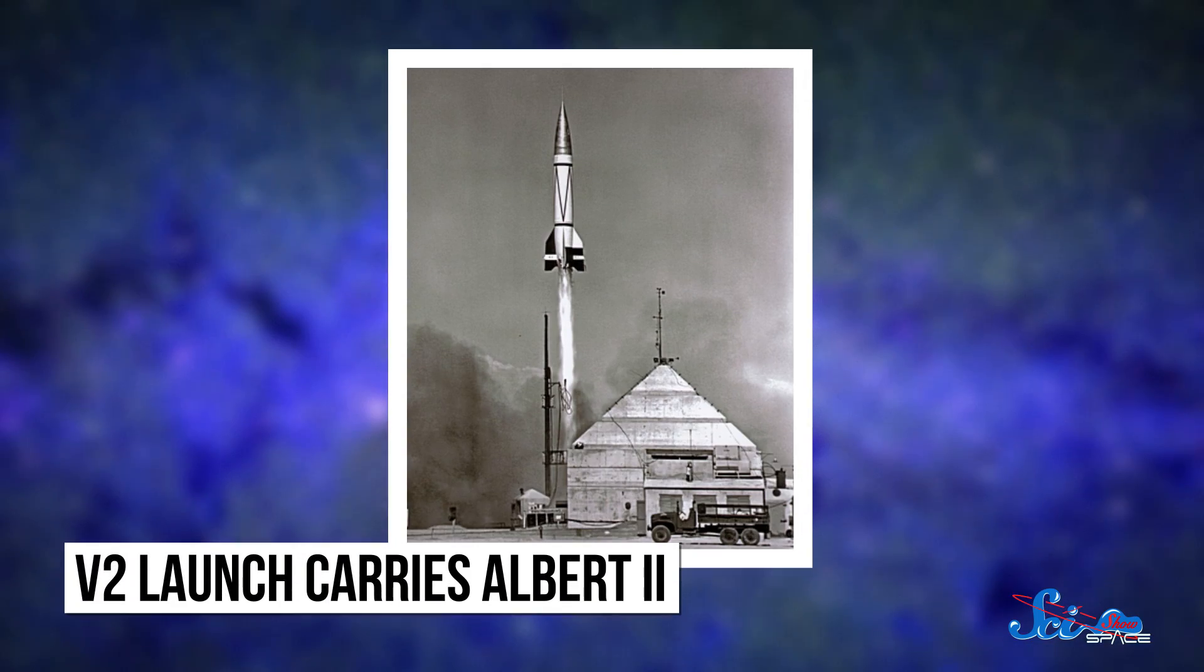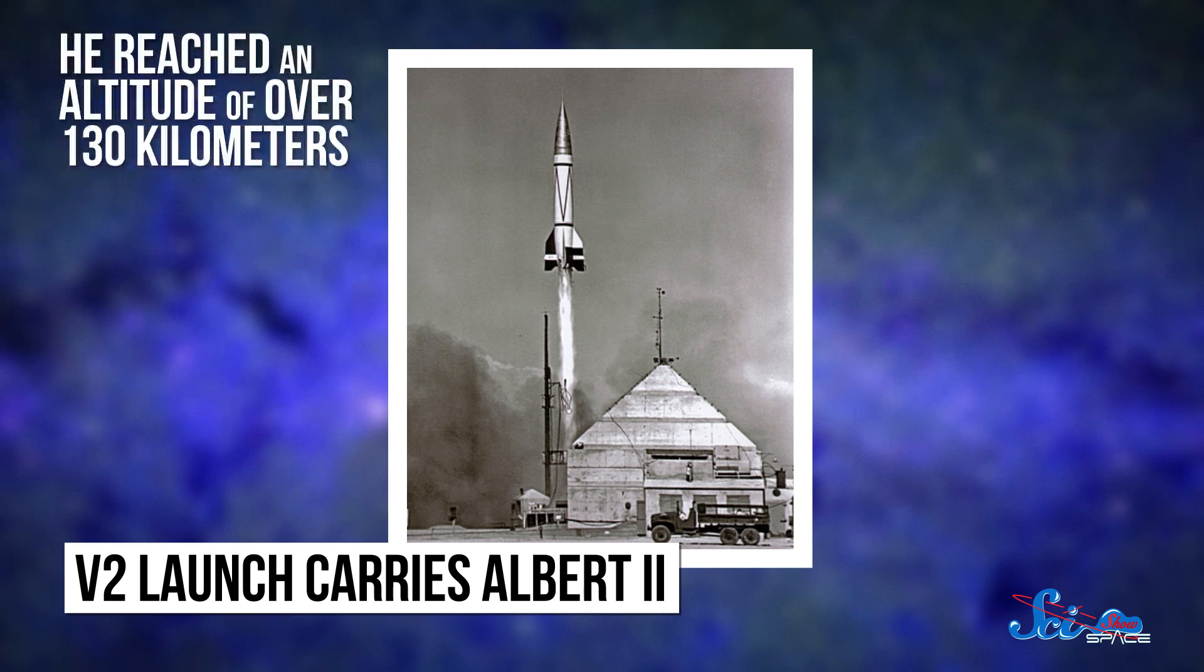Scientists wanted to find out how exposure to all the radiation would affect mammals. Albert II launched in a V-2 rocket from White Sands, New Mexico. He reached an altitude of 130 kilometers, and he survived that part. But he died because of a parachute failure during landing.